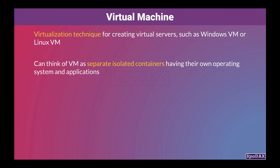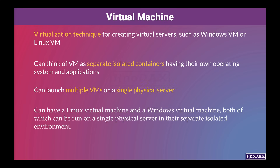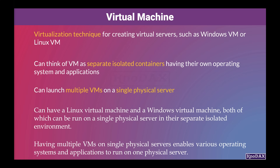Because VMs are self-contained and completely independent, we can launch multiple VMs on a single physical server. For example, we can have a Linux virtual machine and a Windows virtual machine, both running on a single physical server in their separate isolated environments. We can run many instances of operating systems on the same physical server. Having multiple VMs on single physical servers enables various operating systems and applications to run on one physical server. This physical server is also called a host, as it hosts multiple virtual machines.